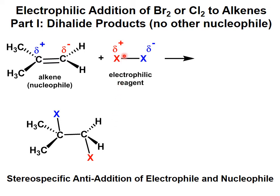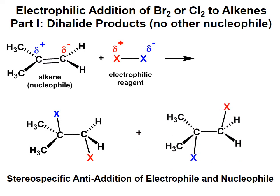Notice that the electrophile has added to the more negative carbon and the nucleophile has added to the more positive carbon, and they are clearly in anti-orientation relative to each other. That is stereospecific — that's why this is a stereospecific reaction. Here's the other possible product; in this case they're pointing in the opposite directions from the first product. So in the addition of Br2 or Cl2 to alkenes, it's stereospecific anti-addition of the electrophile and nucleophile, and you're going to get a pair of enantiomers.